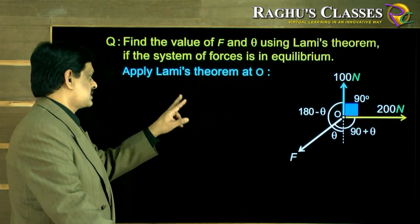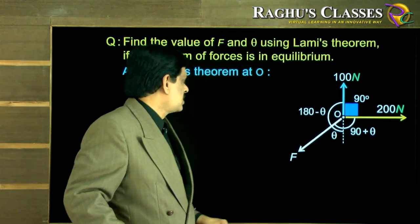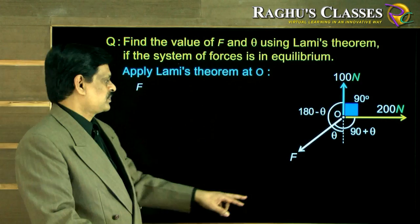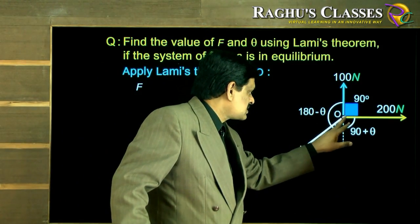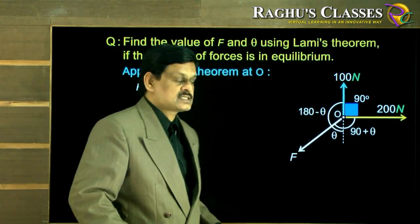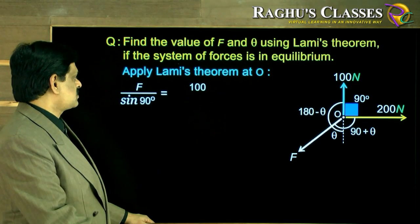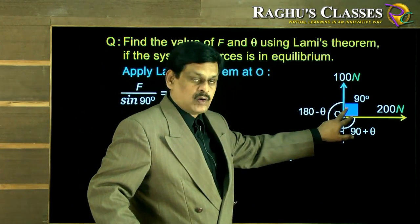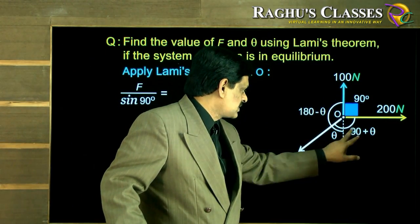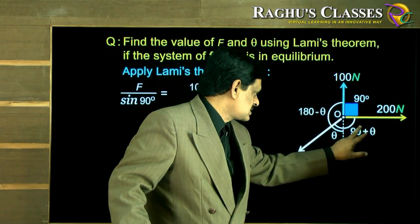So if you take the first force, that means applying Lamy's theorem at O, if you take the first force as F, so F upon sine of the opposite angle, that is sine of 90, is equal to 100. 100 upon sine of the other angle between the other two forces, that is the opposite angle, that is 90 plus theta.